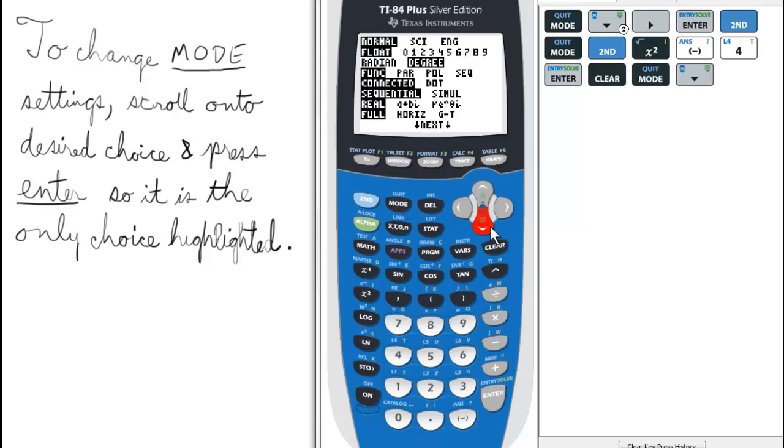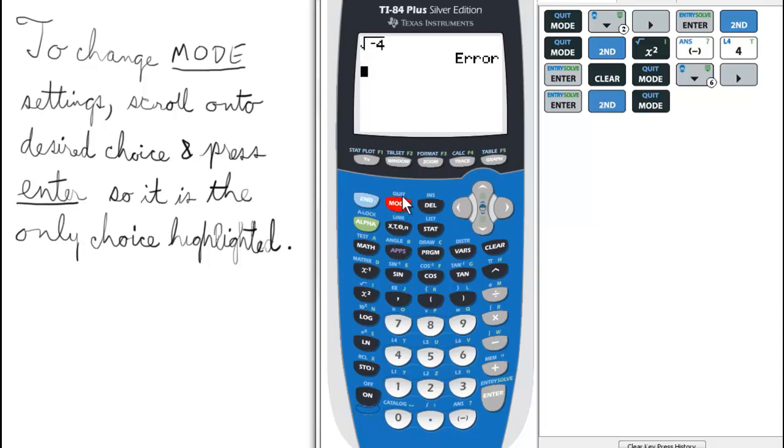Now scroll down to the second to last line and change to A plus BI. Then to quit and go to the home screen, we press second and mode to quit. We can actually press it again, and now square root of negative 4 is 2i.